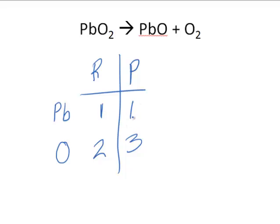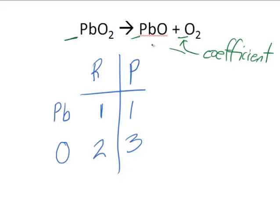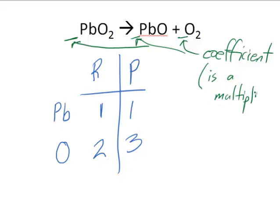The Pb's are balanced, but we have to figure out how to get all the atoms to balance. You can only change the number in the front — that number is called the coefficient. By changing the coefficients, you can balance the chemical equation. The coefficient is a multiplier, so whatever you put in the front multiplies the number of atoms. If I put a two in front of PbO, there are two Pb's and two O's. If I put a three in front of PbO₂, it's three Pb's and six O's.